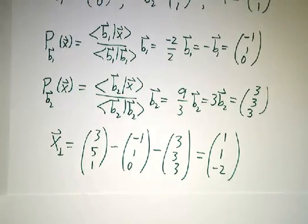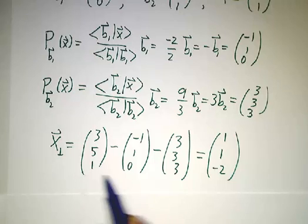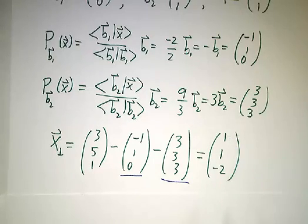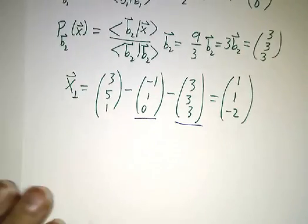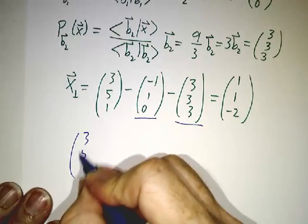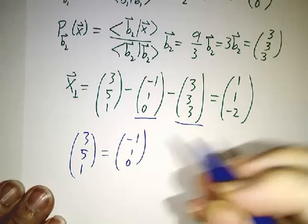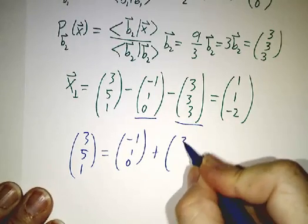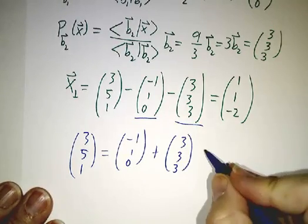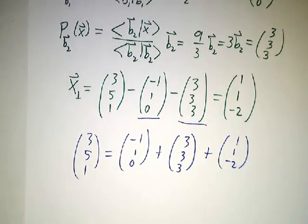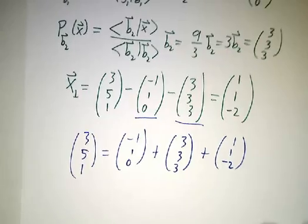So x-perp is whatever is left over after you subtract off the piece along b1 and the piece along b2, and what's left over is (1, 1, -2). Or to put it another way, we've written (3, 5, 1) as the piece along b1 plus the piece along b2 plus the piece that's perpendicular to both. And that's it. That's how to project onto a plane that's spanned by an orthogonal set.